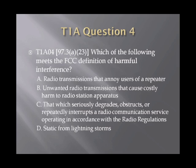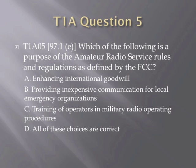Question 4. Which of the following meets the FCC definition of harmful interference? A. Radio transmissions that annoy users of a repeater. B. Unwanted radio transmissions that cause costly harm to radio station apparatus. C. That which seriously degrades, obstructs, or repeatedly interrupts a radio communication service operating in accordance with the radio regulations. Or D. Static from lightning storms. Question 5. Which of the following is the purpose of the amateur radio service rules and regulations as defined by the FCC? A. Enhancing international goodwill. B. Providing inexpensive communication for local emergency organizations. C. Training of operators in military radio operating procedures. Or D. All of these choices are correct.